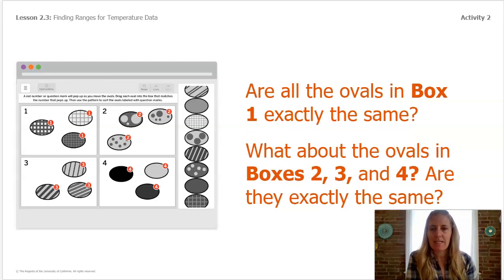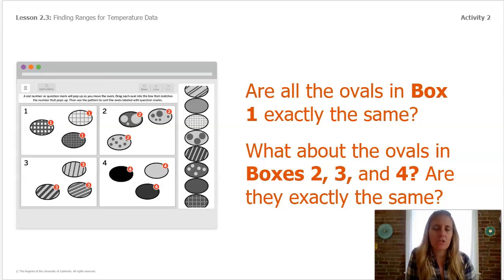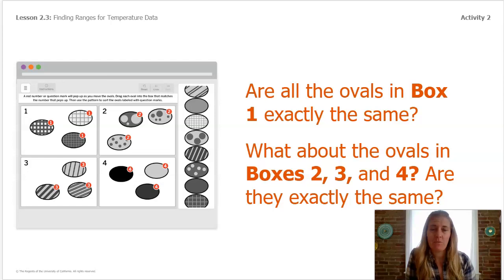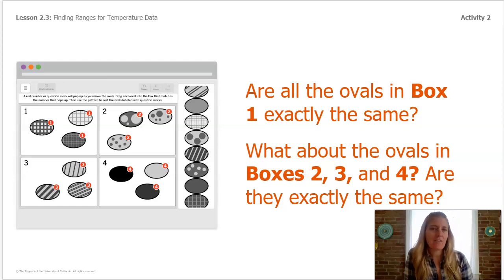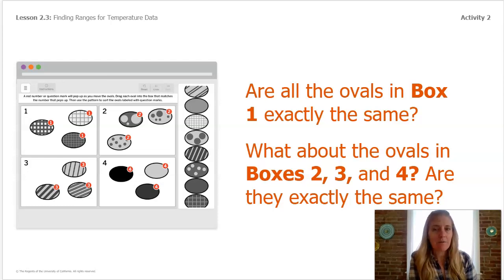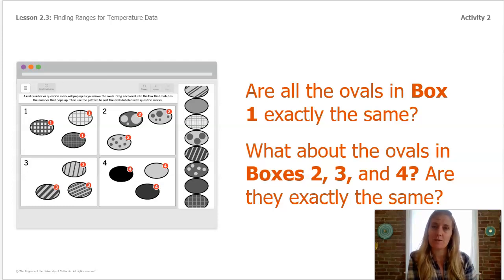But what we want to remember is: are all the ovals in each box exactly the same? For example, if you look at box number one, is every oval in there exactly the same? What about boxes two, three, and four — are they exactly the same? Even though the ovals are not exactly the same, there's a pattern to the type of oval that goes in each box. Because of this pattern, we can predict where the ovals with the question marks belong.